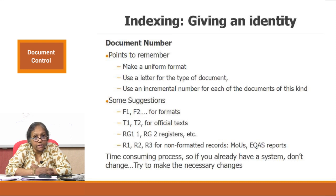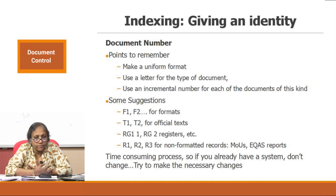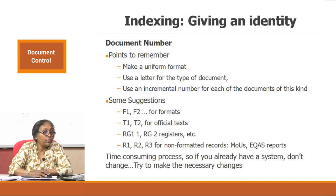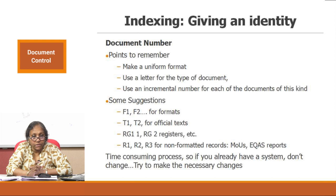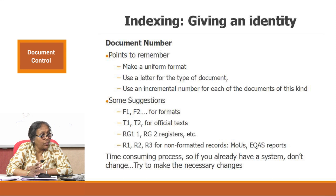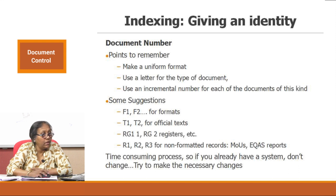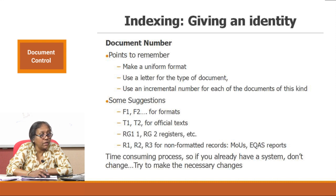Indexing is how you give an identity to a document. How do you give a number to a document? It is a challenge since a laboratory has multiple operations, so you have to evolve a mechanism for your laboratory. Points to remember while giving numbers: make uniform formats and use a letter for each type of document. Use an incremental number for each document of that kind. You can call your formats F1, F2, F3, F4 as your document number.